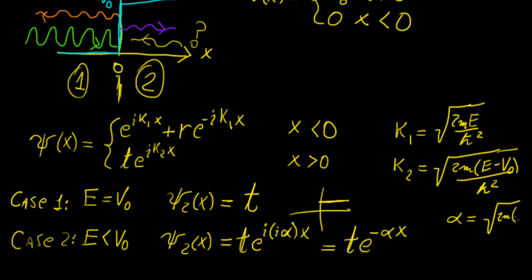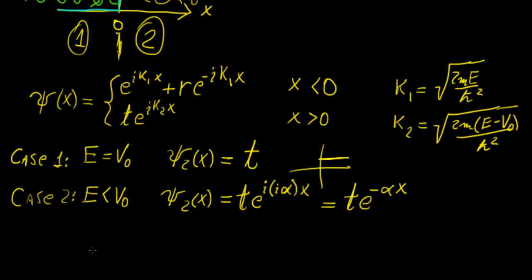Alpha can just be written as this quantity here. It's just going to be 2m E minus V0. Actually, it would be written in the following way. Alpha is going to be defined in the following way, because we already extracted the imaginary unit. We can write this as V0 minus E over h bar squared.